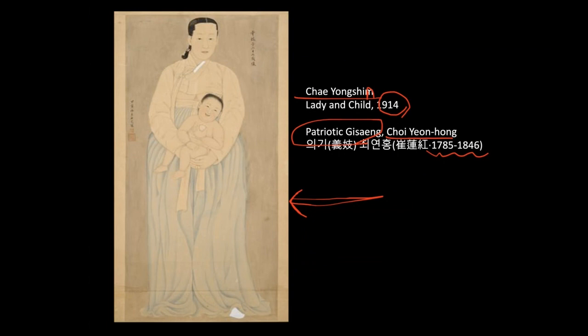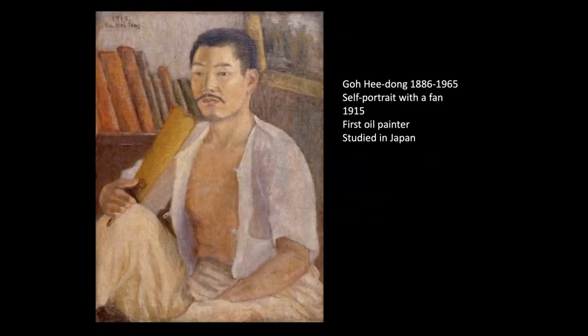She refused to serve foreign soldiers or foreign dignitaries. It's almost like a Virgin and Child of the European tradition — the mother holding the child — though usually a gisaeng does not get married. So people in the early 20th century were influenced by European painting style.